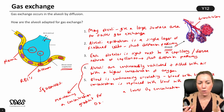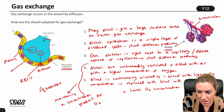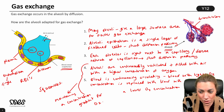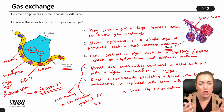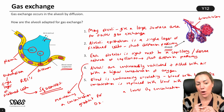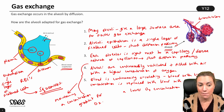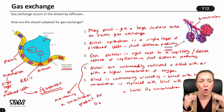I should also mention the wall of the capillary, because gases have to cross both the epithelium of the alveolus and the wall of the capillary. The capillary wall is called the endothelium, and again this is a single layer of flattened — squamous — epithelial cells. So the gases only have to cross two single layers of cells, giving a short diffusion pathway — a key adaptation for any exchange surface.